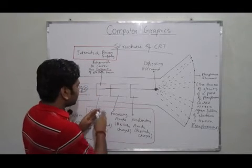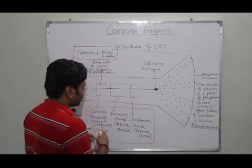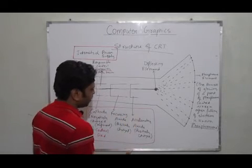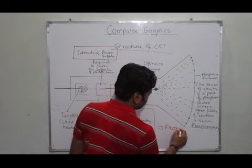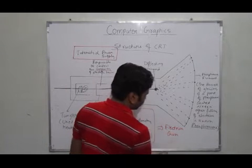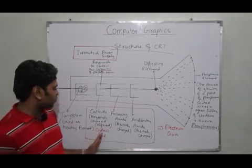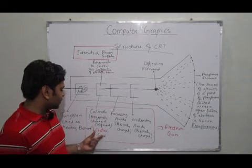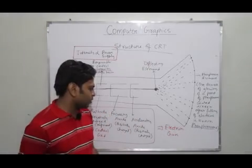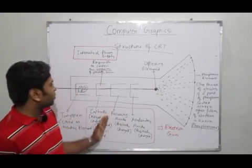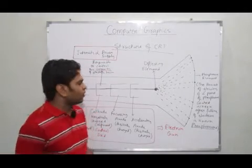Since they all have a cylindrical shape, the triplet of these three components is known as the electron gun. The electron gun is nothing but a combination of the cathode as control grid, focusing anode, and accelerating anode, which together control the intensity and brightness of the electron beam.